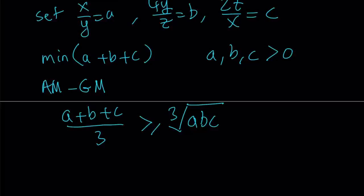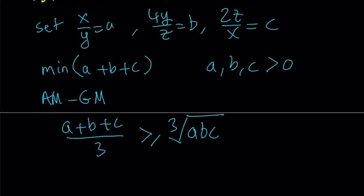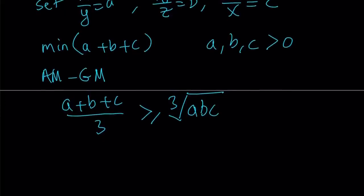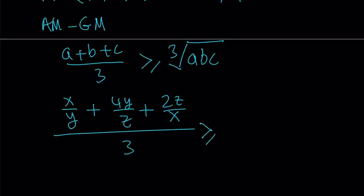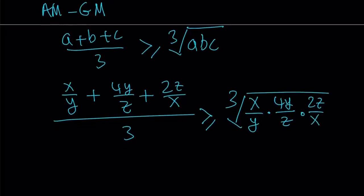Let's see how we can use this to our advantage. Notice that x over y is a and everything else is right there. So I'm going to plug in all these values. a is x over y, b is 4y over z, and c is 2z over x. I add them up and divide by 3, and this is supposed to be greater than or equal to the cube root of their product. This is where the fun part starts because when you multiply these expressions, pretty much all the variables cancel out.